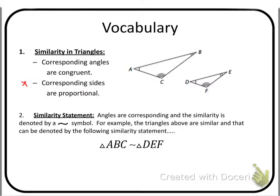Now the sides: corresponding sides are proportional. That means the proportion between AC and DF — so AC divided by DF — is going to equal AB divided by DE, and also CB over EF. Remember in the last lesson when we did the scale factor, it's the same concept here: the corresponding sides are proportional.